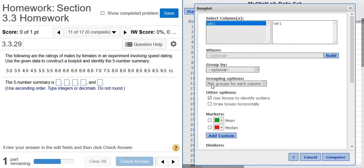Select VAR1. Be really, really careful here. You want to uncheck this, where it says Use Fences to Identify Outliers, and then check on Draw Boxes Horizontally. Very, very important.